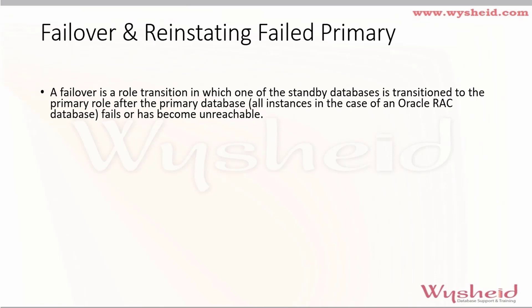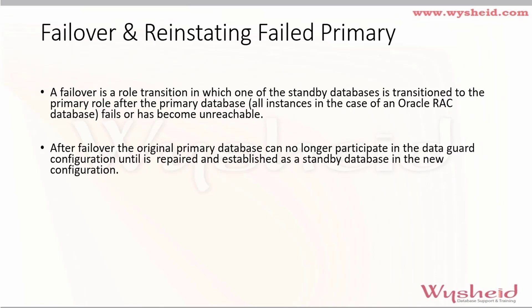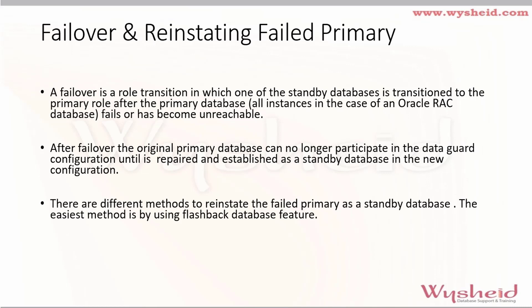In the case of RAC, all the instances of that primary database are affected. After the failover, the original primary database can no longer participate in the DataGuard configuration until it is repaired and established as a standby database in the new configuration. This means after the failover, we must convert our existing primary database into a standby database and make it part of our new DataGuard configuration. There are different methods to reinstate the failed primary database as a standby database, and the easiest method is by using the flashback database feature.